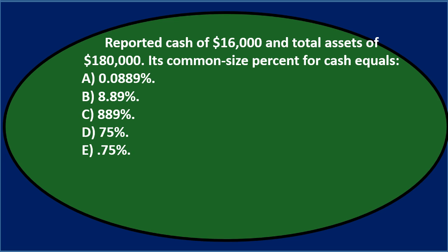Next question: reported cash of 16,000 and total assets of 180,000 — the common size percent for cash equals what? We have some answer percentages, so we're actually going to have to do some calculations. Let's jump over to Excel for those.